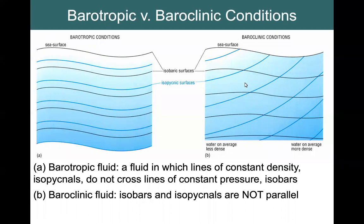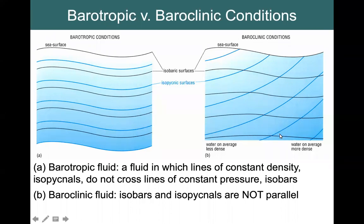The isobars initially follow the sea surface. However, as we go deeper, the change in density is going to affect our isobars as well, because pressure is not only affected by the height of the sea surface but also by the mass of the water above it — and therefore by the density. So the isobars will start to flatten out as we get lower. In baroclinic conditions, the isobars cross or are inclined to the isopycnals. If the isopycnals are sloping up and to the right, then the isobars in general will be sloping up and to the left.